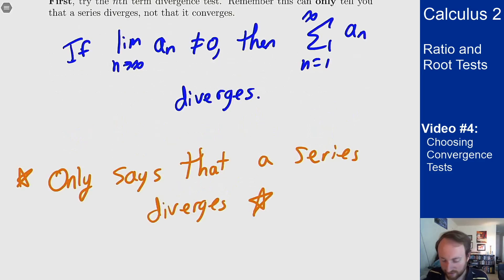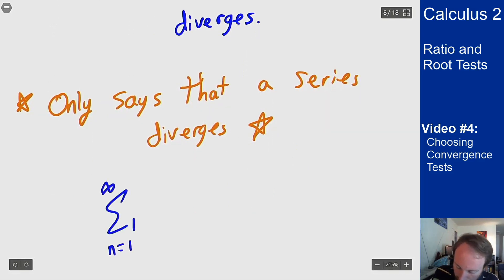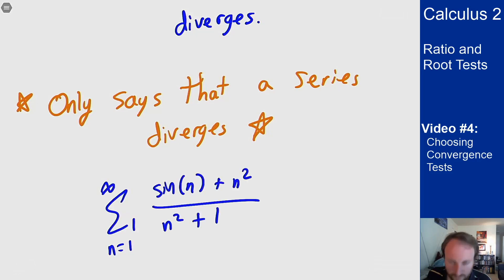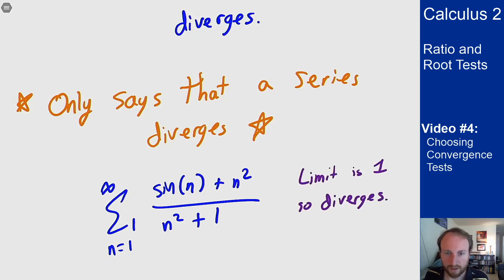One example of this: for the series from 1 to infinity of sin(n) + n² over n² + 1, if I look at the limit of these terms it goes to 1, not zero, therefore this series diverges by the divergence test.